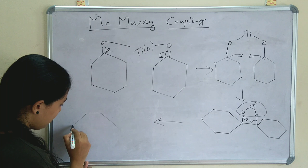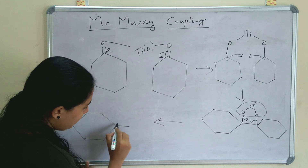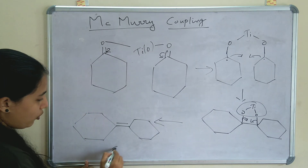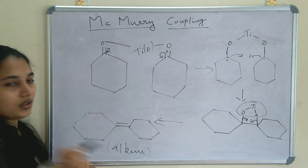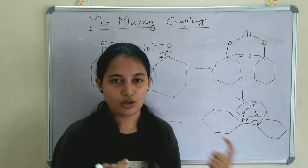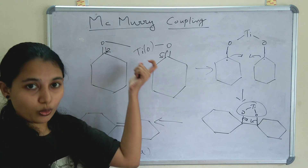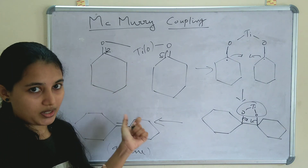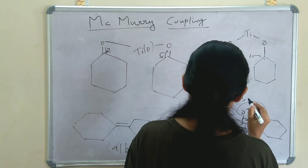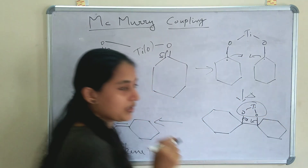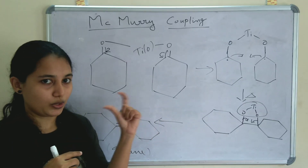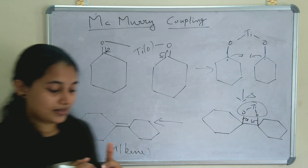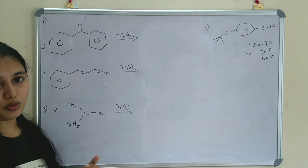In the next step, this C-O bond to titanium is eliminated. The electrons come in to form the double bond, so we get cyclohexane with a double bond — an alkene is formed. This is the simple mechanism of McMurry coupling: low-valent titanium metal acts as the reducing agent, single electron transfer takes place, and heat is applied. When heat is applied, the bond eliminates and an alkene is formed. Let's solve some problems of McMurry coupling.